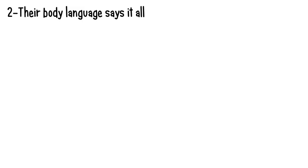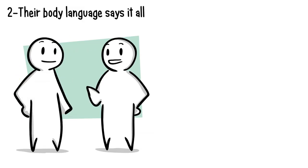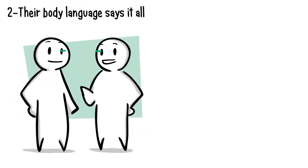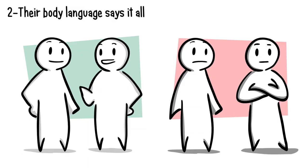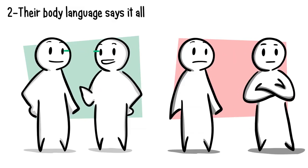Number two. Their body language says it all. When we like someone, we have a tendency to make eye contact, mirror their body language, and lean in closer. But when someone dislikes you, they will avoid eye contact, cross their arms, and lean away from you.